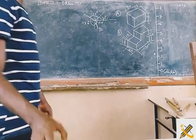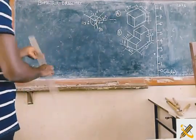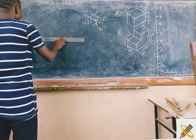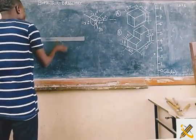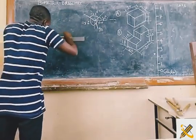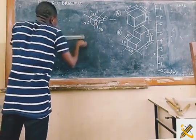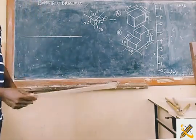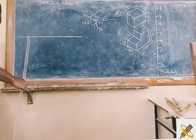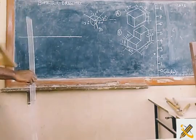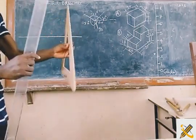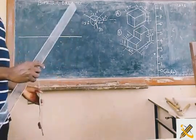So to produce this, my very first process is to produce a horizontal line. I am going to produce a horizontal line. After producing that horizontal line, the next step is to pick one of your set squares.